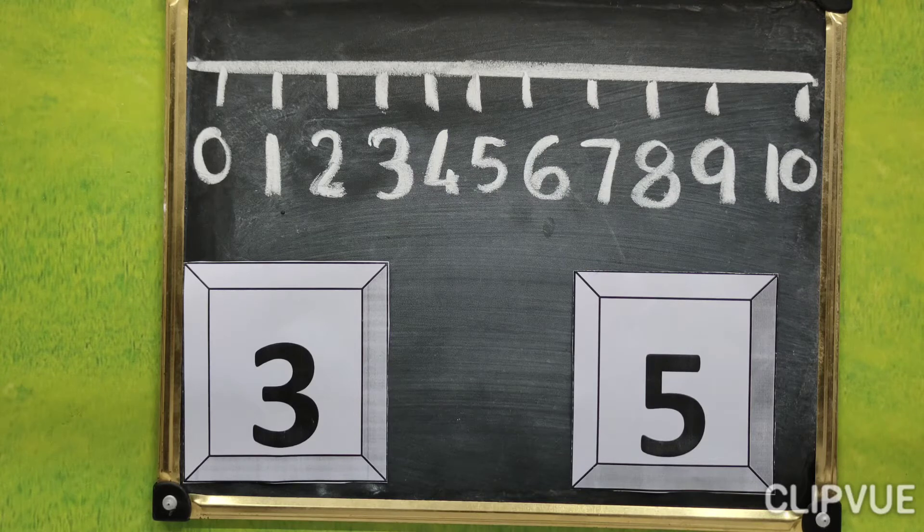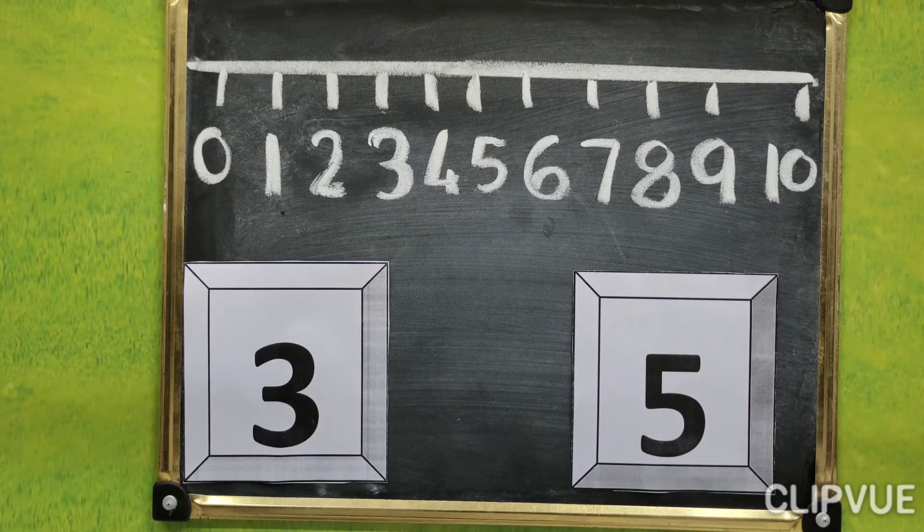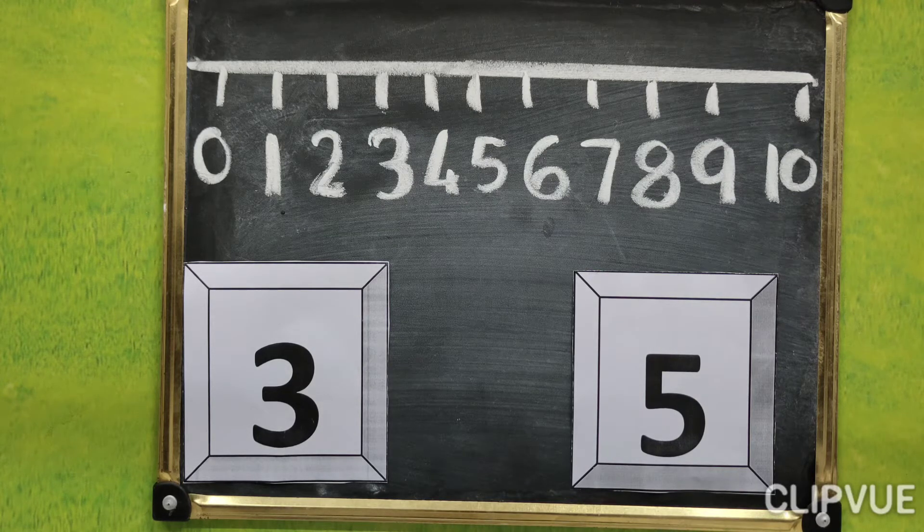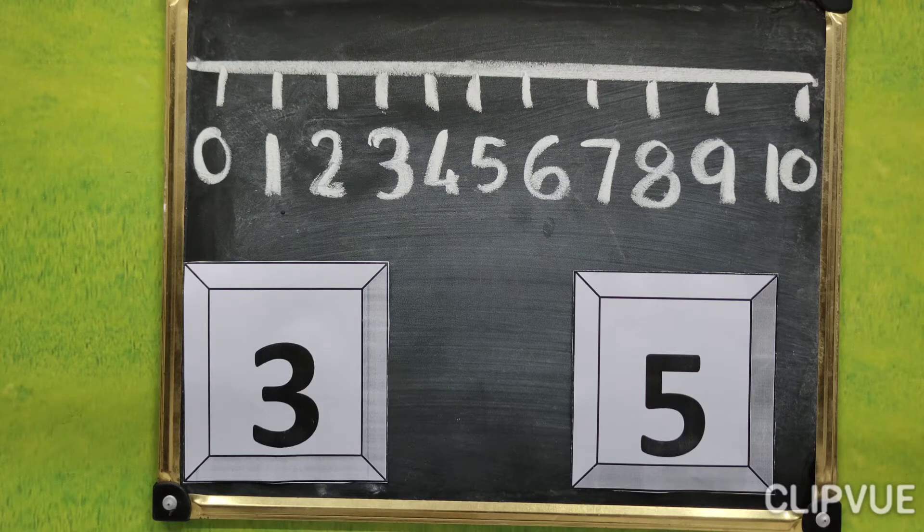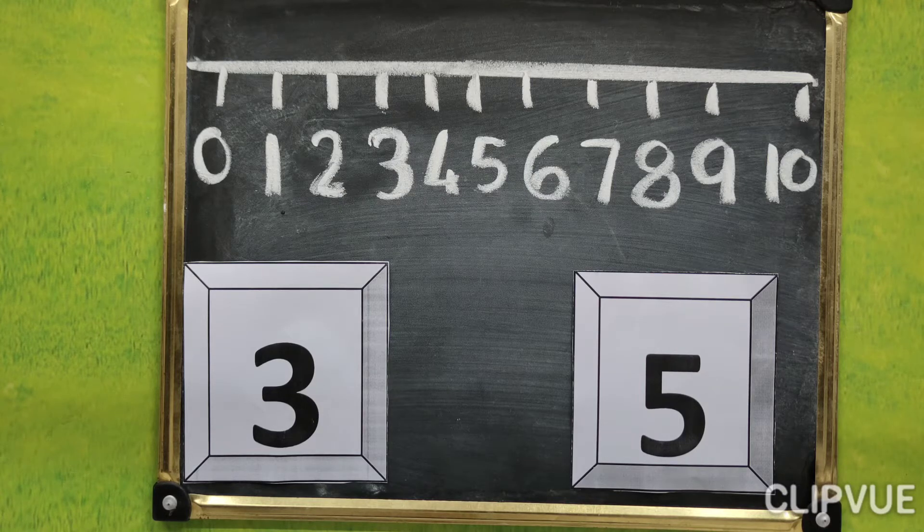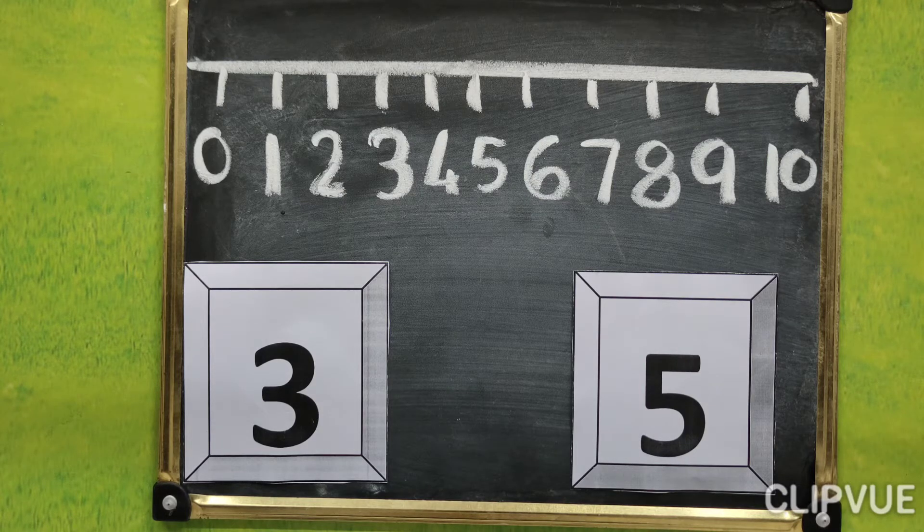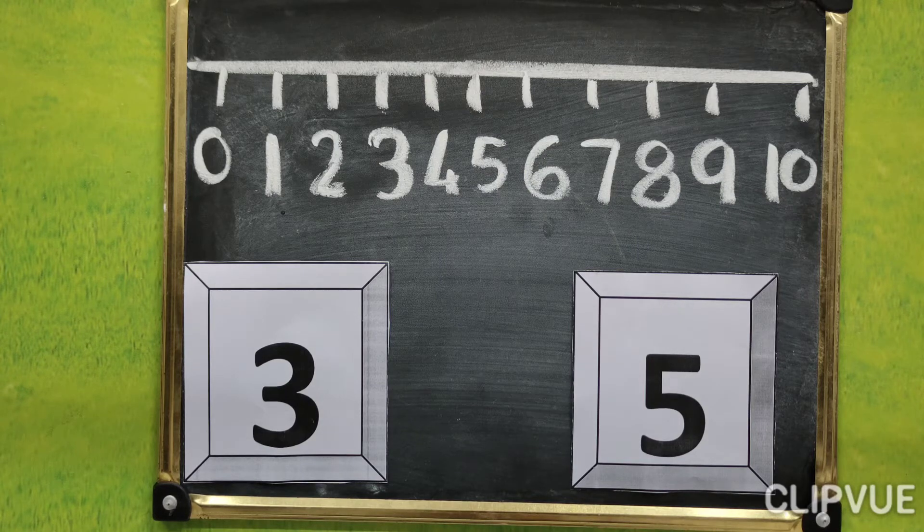So in this number line concept, the number which comes next is called bigger number, or you can say big number.